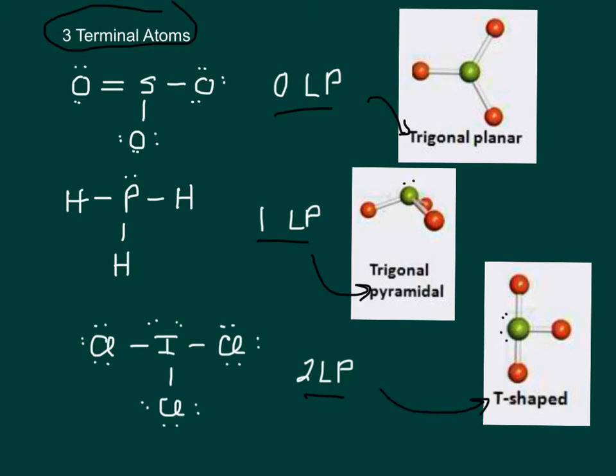Trigonal planar, 120 degrees. You can see that that's as far apart as three things could get. Trigonal planar, we already—trigonal pyramidal we already did, less than 109.5 degrees. And T-shape, if you can see, you've got two angles here. You've got 90 degrees and you've got 180 degrees. So it's 90 and 180.